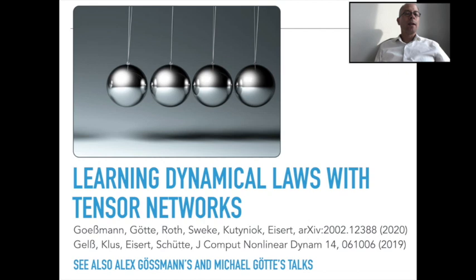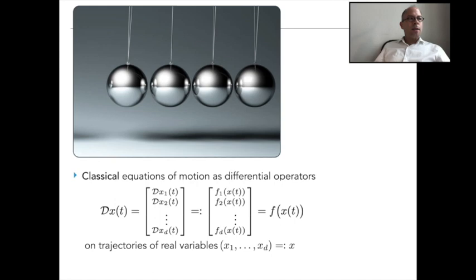Let me turn to the second big question of this talk — the learning of dynamical laws with tensor networks, specifically classical dynamical laws commonly given as differential operators on trajectories of some real variables. It has been the key endeavor of the natural sciences over centuries to find out what these precise dynamical laws or classical equations of motion are in the first place. When Kepler stared into the sky and saw these funny points walking around, it took a lot of data and his genius to find the underlying dynamical laws, which he formulated into the now-famous Kepler's laws.